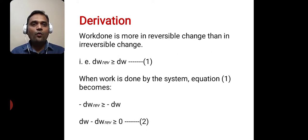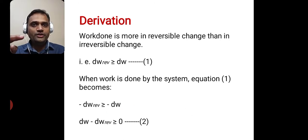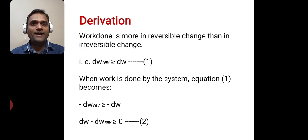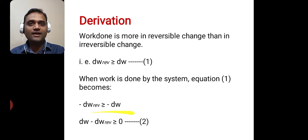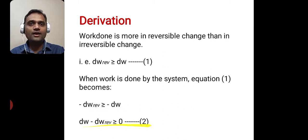Now, when work is done by the system, equation 1 becomes: minus dW reversible is greater than or equal to minus dW. There are two things: one is when work is done by the system, and when work is done on the system. Whenever there is work done by the system, there comes a negative sign. Rearranging this equation, we get dW minus dW reversible is greater than or equal to 0. This is equation 2.